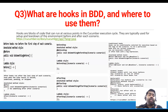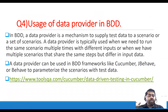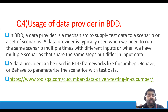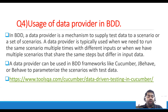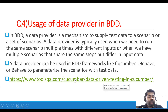The next question is the usage of data provider in BDD. A data provider is a mechanism to supply test data to a scenario or set of scenarios. It is typically used when you need to run the same scenario multiple times with different inputs, or when multiple scenarios share the same steps but differ in input data. Data providers can be used in BDD frameworks like Cucumber JVM or BDD apps to parameterize scenarios. A blog link will be shared for practical examples.